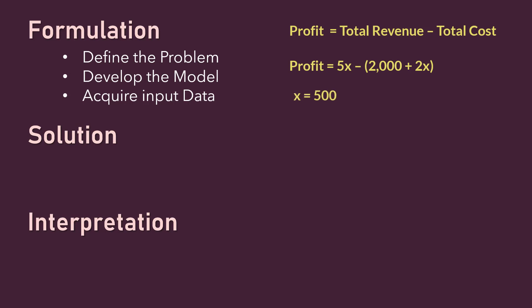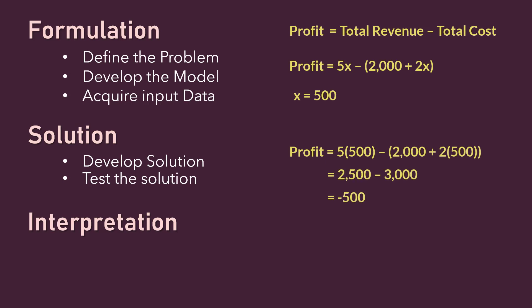Then, under solution, we're going to develop a solution and test to see if it is correct, or if it meets our objective. If we solve for profit here, we see that we have a loss of 500. Since we don't want a loss, we can retrace our steps back to the model to see where changes can be made.